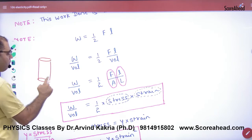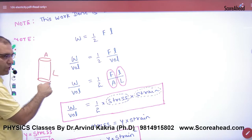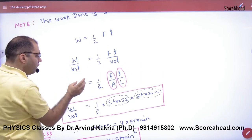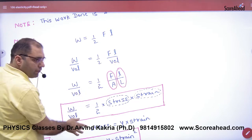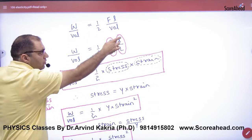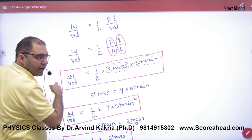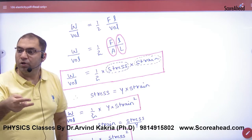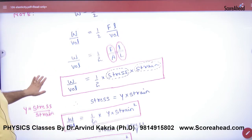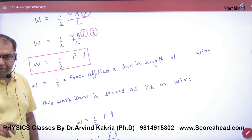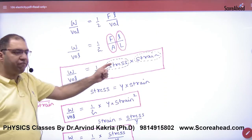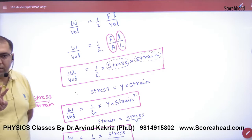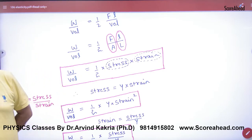Now, the volume of the wire: volume = area (A) × length (L). So work done divided by volume gives us work done per unit volume. Force divided by area is stress, and small l divided by capital L is strain. So the formula: work done per unit volume = ½ × stress × strain. Note this formula next — work done per unit volume in stretching a wire equals ½ × stress × strain.